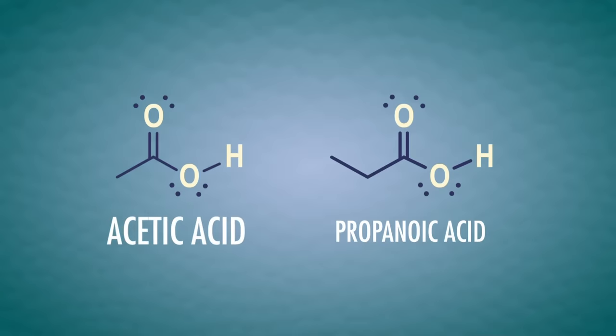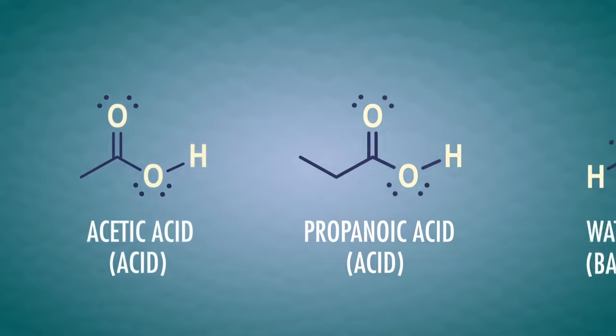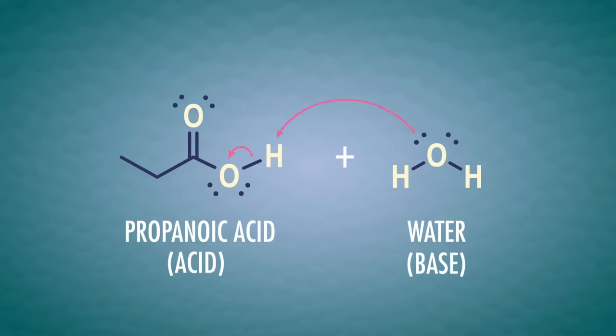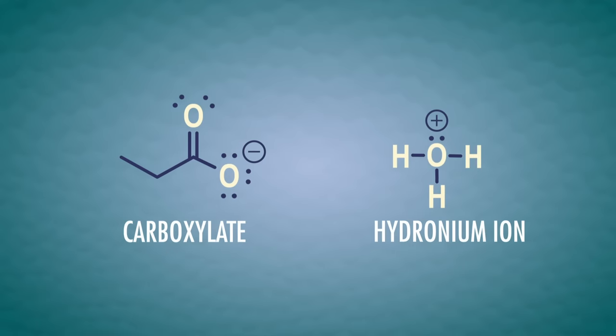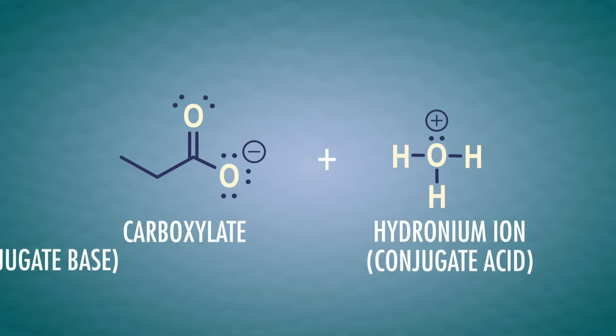Carboxylic acids like acetic acid and propanoic acid are Brønsted-Lowry acids. When we dissolve these acids in water, the water acts as a base and removes a proton to form a hydronium ion and the corresponding carboxylate ion. We say that hydronium is the conjugate acid of water, and the carboxylate is the conjugate base of the carboxylic acid.